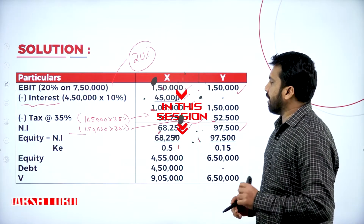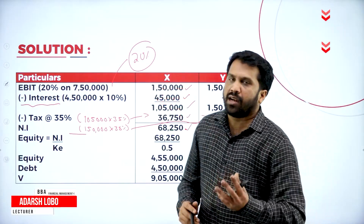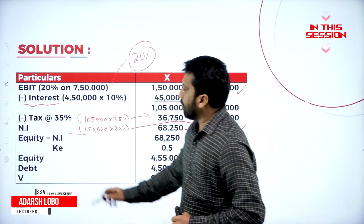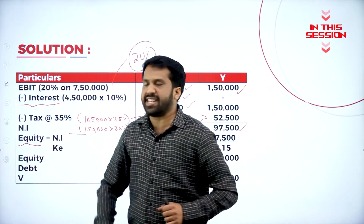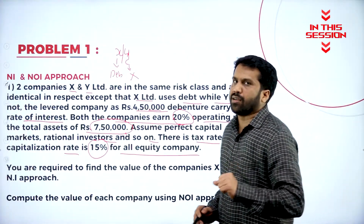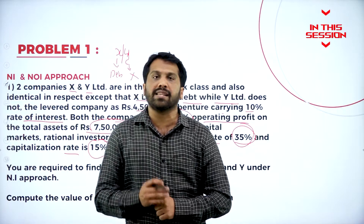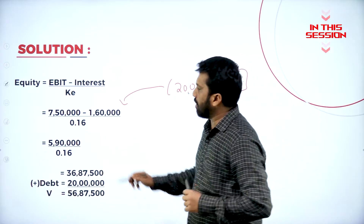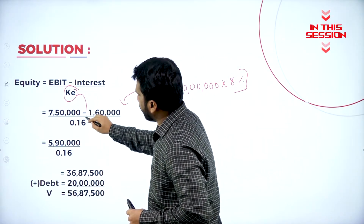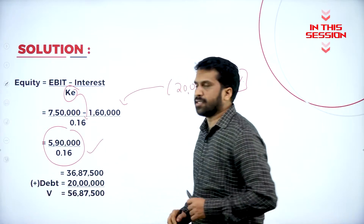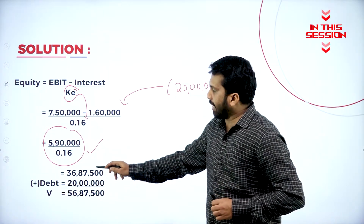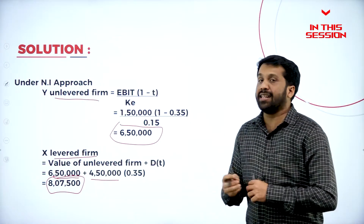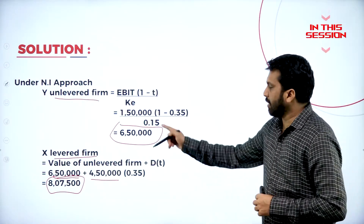We got net income 68,250. After getting net income, the next procedure for NI is to find the value of equity. What is the capitalization rate — cost of capital — we can call it the capitalization rate. 750 minus 160 divided by cost of equity gives us 36,87,500. For Y, the unlevered form, and X, the levered form — levered form means they have debentures; unlevered means they don't.